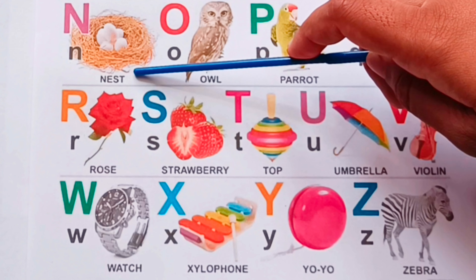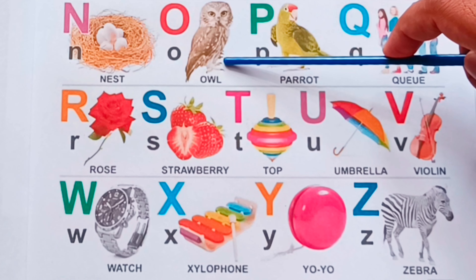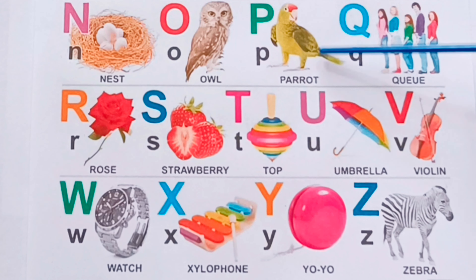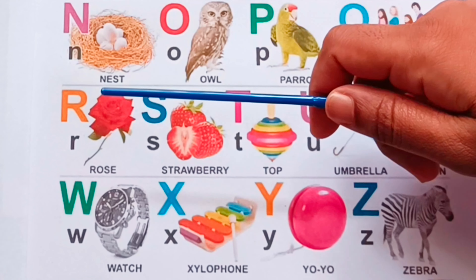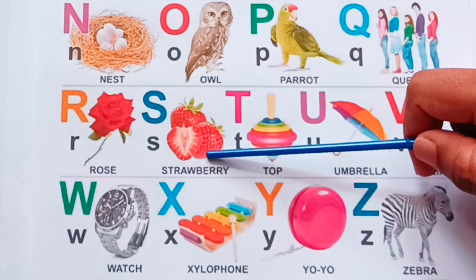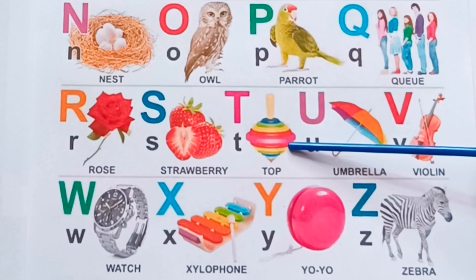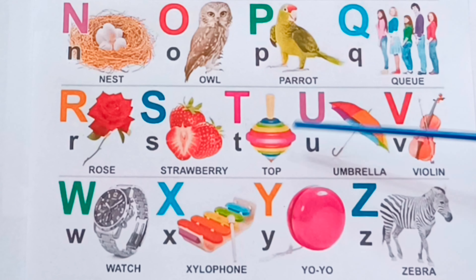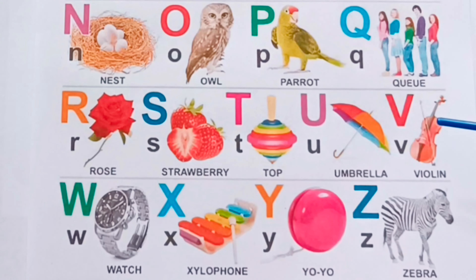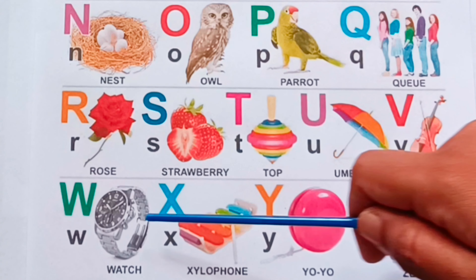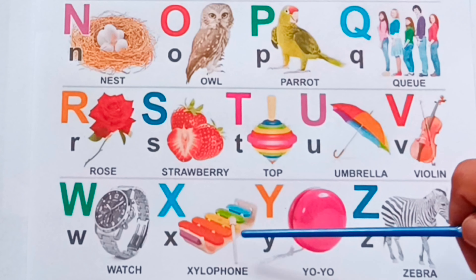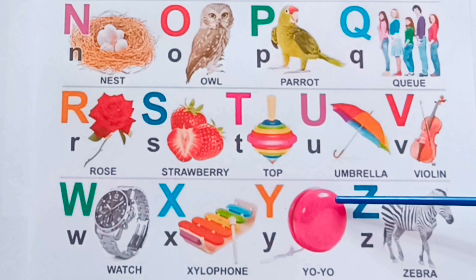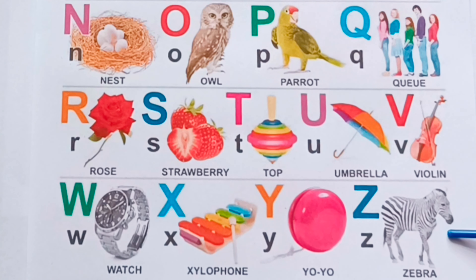N for Nest, O for Owl, P for Parrot, Q for Queue, R for Rose, S for Strawberry, T for Top, U for Umbrella, V for Violin, W for Watch, X for Xylophone, Y for Yoyo, Z for Zebra.